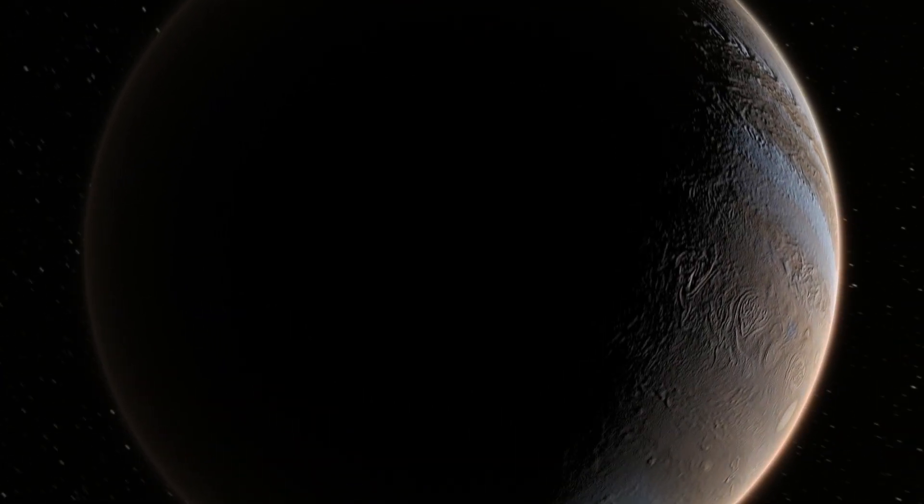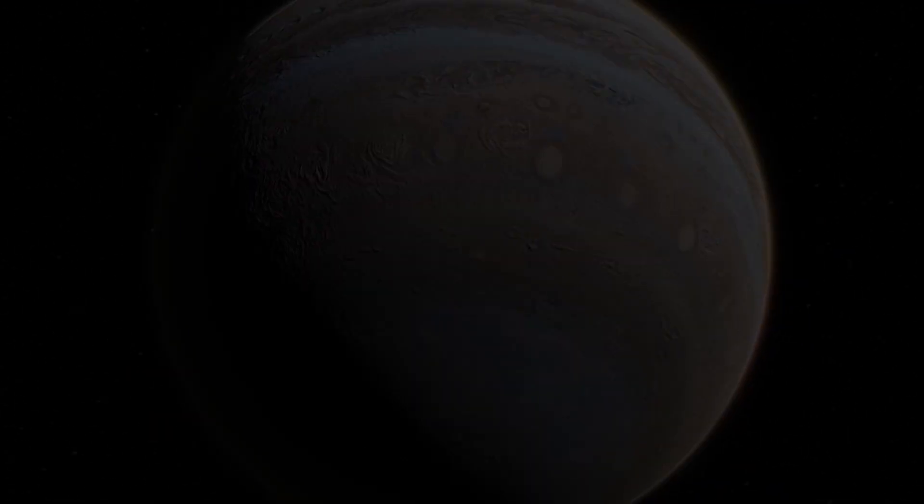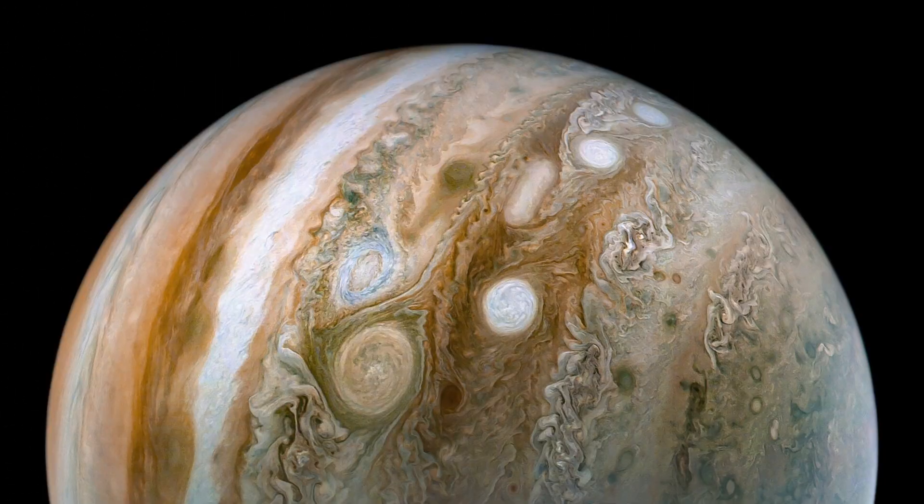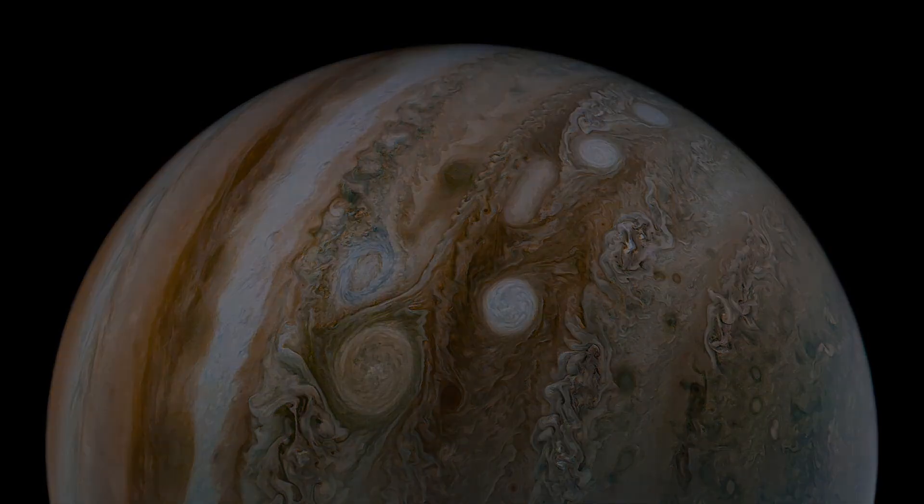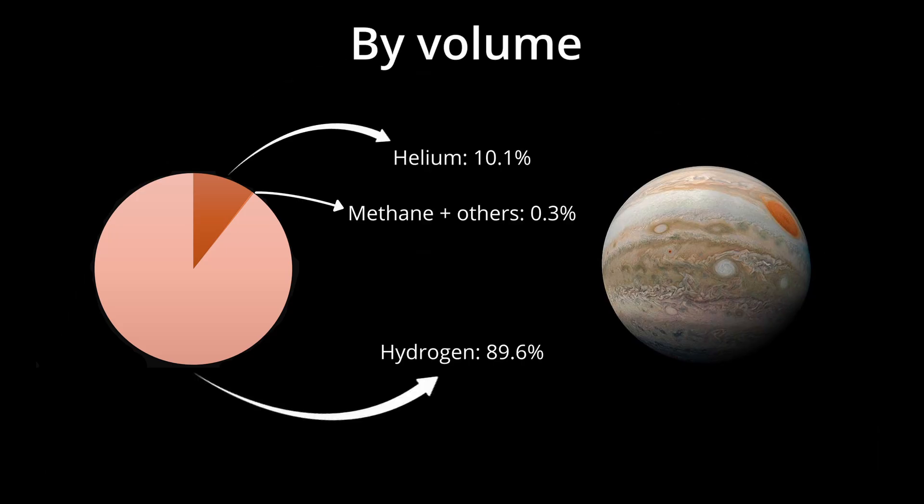The king of the planets, the gas giant, the planet of storms, the solar system's failed star - all of these refer to the planet Jupiter. Although the first three are true, the last one is a common misconception. It is true that Jupiter is primarily made up of hydrogen and helium, both being the main elements in stars that allow for fusion to take place.